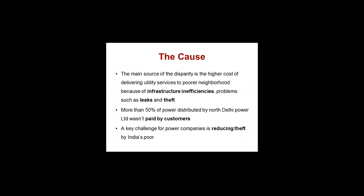Why does this happen? The main source of this disparity is the higher cost of delivering utility services to poorer neighbourhoods because of infrastructure inefficiency and problems like leaks and theft. In any urban slum area, roads are not good, pipes are always leaking, and people are making illegal connections to power supply and water. Because of this, more than 50% of the power distributed by North Delhi Power is not paid by customers — they put a wire onto an existing line and draw power without authorization. A key challenge for power companies is reducing theft.